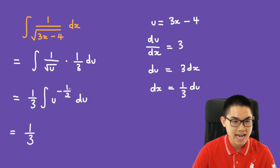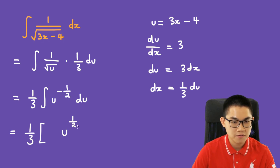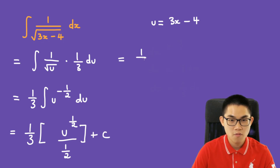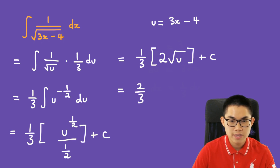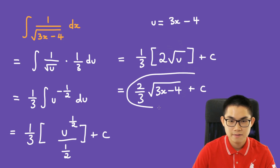The antiderivative of this is u to the power of positive 1 over 2, divided by 1 over 2, plus C. And we get 1 over 3 times 2 times the square root of u, plus C. Finally, we have 2 over 3 times the square root of 3x minus 4, plus C. And that's it.